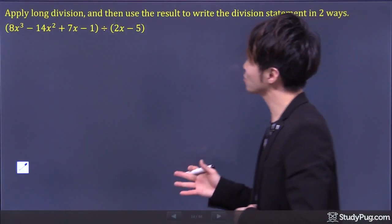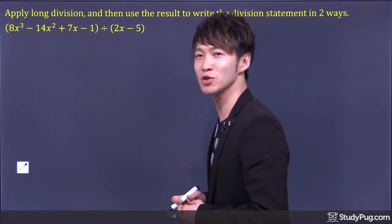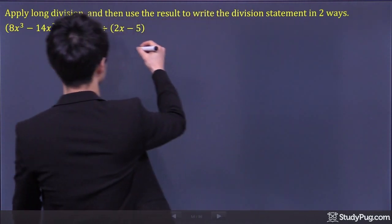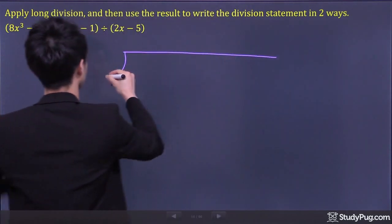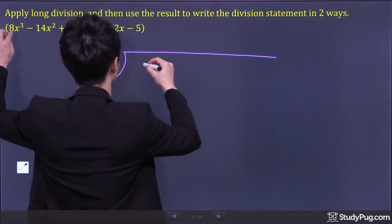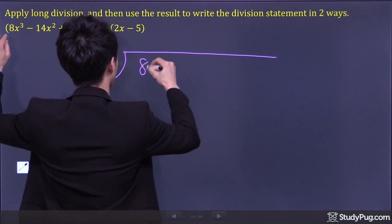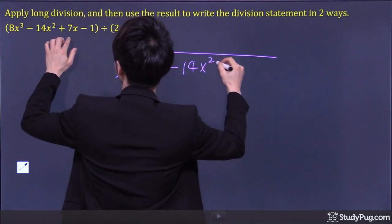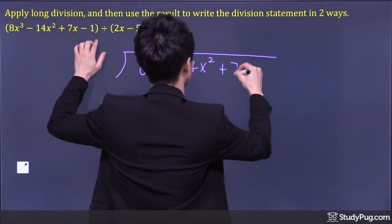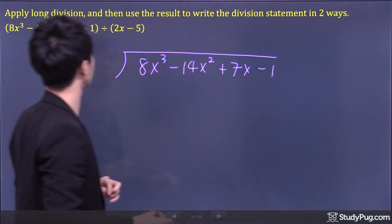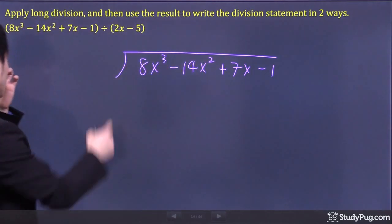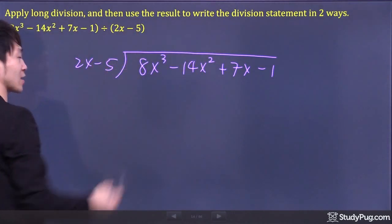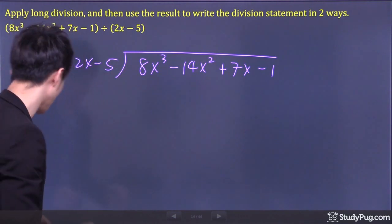Let's apply long division to polynomials. So here we have 8x³ minus 14x² plus 7x minus 1 divided by 2x minus 5. Are you guys ready? Let's go.